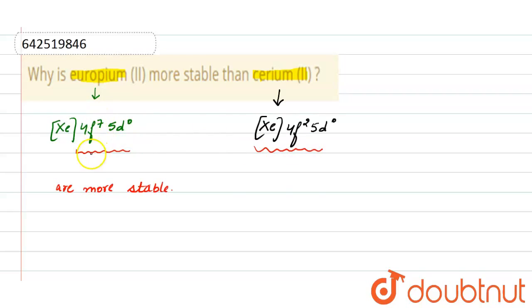Because europium has half-filled electronic configuration, that is why europium is more stable than cerium.